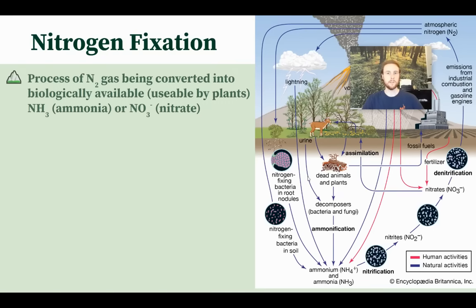Nitrogen fixation is the first step in the nitrogen cycle and is the most critical for life on Earth. It is the process of nitrogen gas from the atmosphere being converted into biologically usable nitrogen — a form that can be taken in by plants — which is NH3, ammonia, or NO3, nitrate. This can happen naturally or synthetically. Naturally, it can be done by nitrogen-fixing bacteria or by lightning storms, which can cause some of the atmospheric nitrogen to be converted to ammonia, but it is primarily done by bacteria.